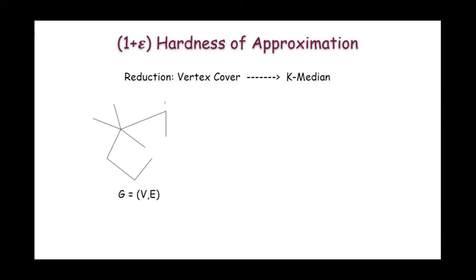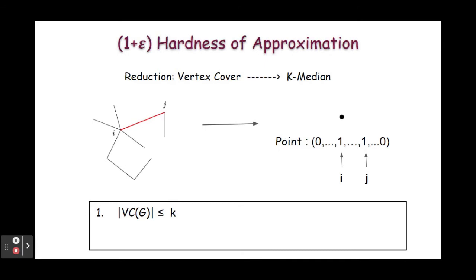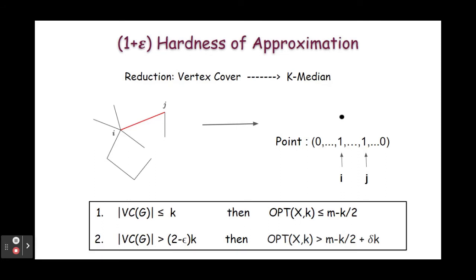So let us now describe the reduction from the vertex cover problem to the k-median problem. Suppose we are given a graph instance G with vertex set V and edge set E. We are going to map every edge of this graph to a point in a |V|-dimensional Euclidean space. The position of this point is defined as follows: if the edge is incident on two vertices i and j, then the i-th and j-th coordinates of that point are going to be one and the rest of the coordinates are going to be zero. Using this mapping, we show that if the vertex cover of the graph is less than k, then the optimal k-median cost of the instance is at most (m minus k)/2, and if the vertex cover is greater than (2 minus epsilon) times k, then the optimal k-median cost is greater than (m minus k)/2 plus delta*k.